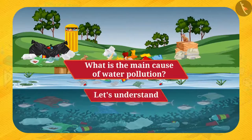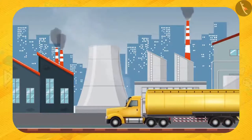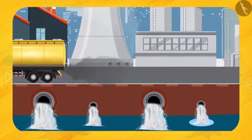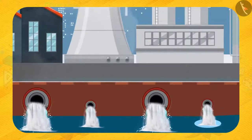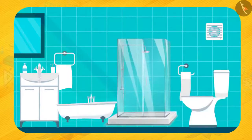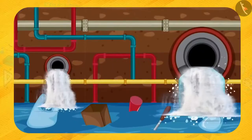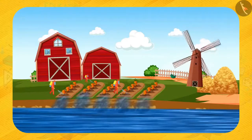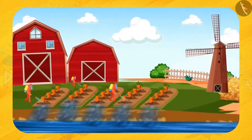Factories produce lots of harmful chemicals. These harmful chemicals are dumped in a nearby reservoir, which pollutes the water. Do you know where the wastewater from the sink, bathtub, shower, and toilet goes? The wastewater is also dumped in the nearby reservoir, making the water dirty. Not only this, the use of pesticides and fertilizers by farmers also pollutes the water.